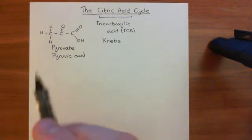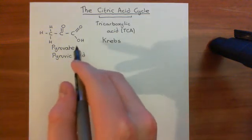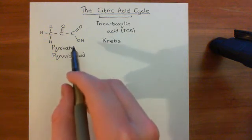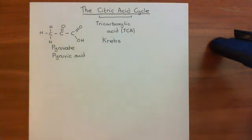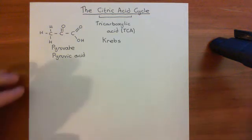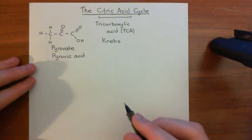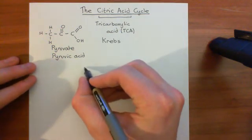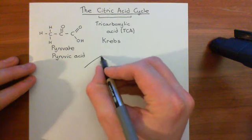Within the cytoplasm of the cell we have pyruvic acid molecules. Glycolysis — the entire glycolytic pathway — occurs within the cytoplasm of the cell. But the tricarboxylic acid cycle, or the citric acid cycle, or the Krebs cycle, is going to occur within the matrix of the mitochondria. So let's have a brief discussion of the structure of a mitochondrion.